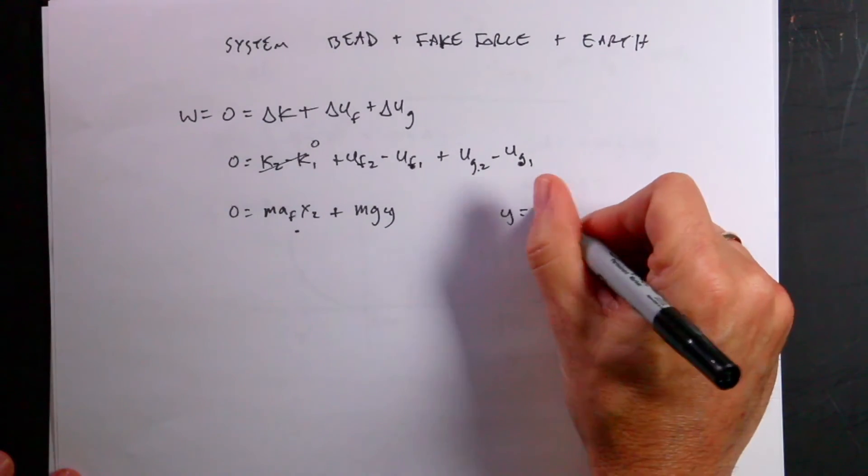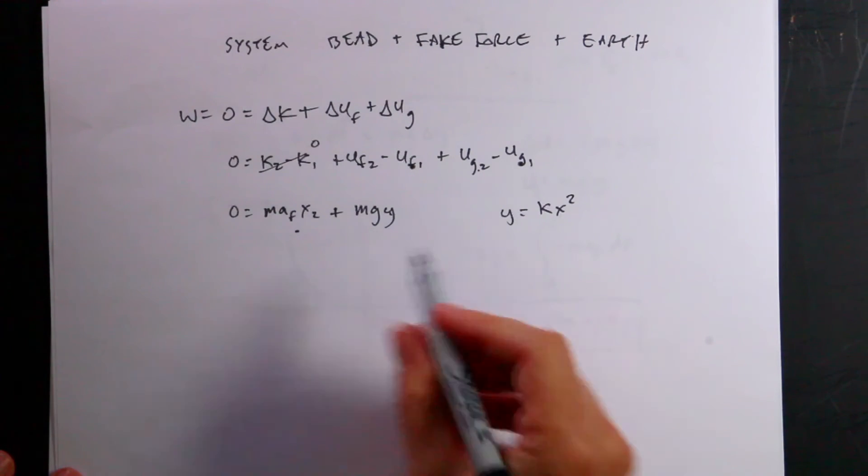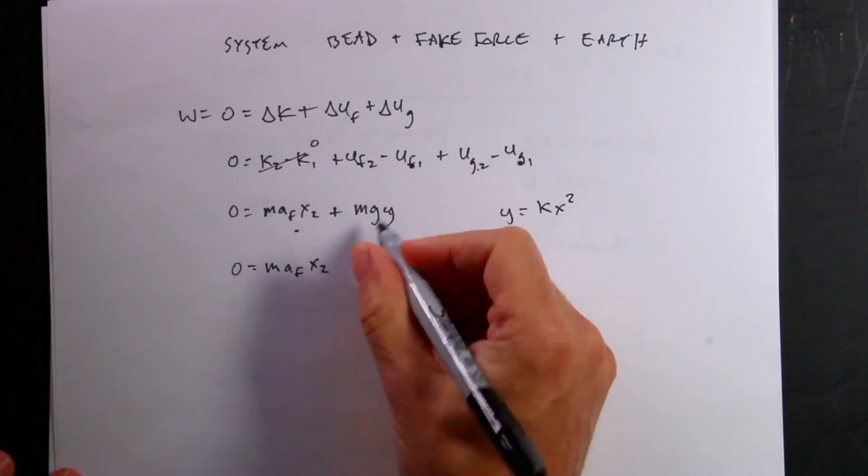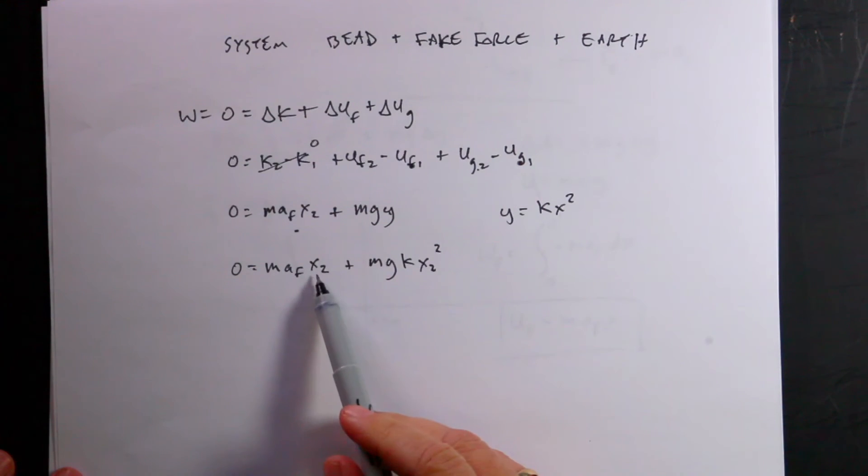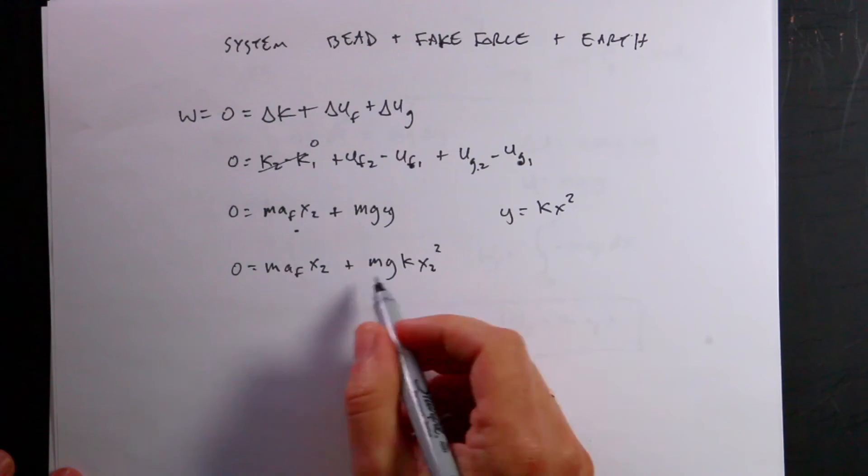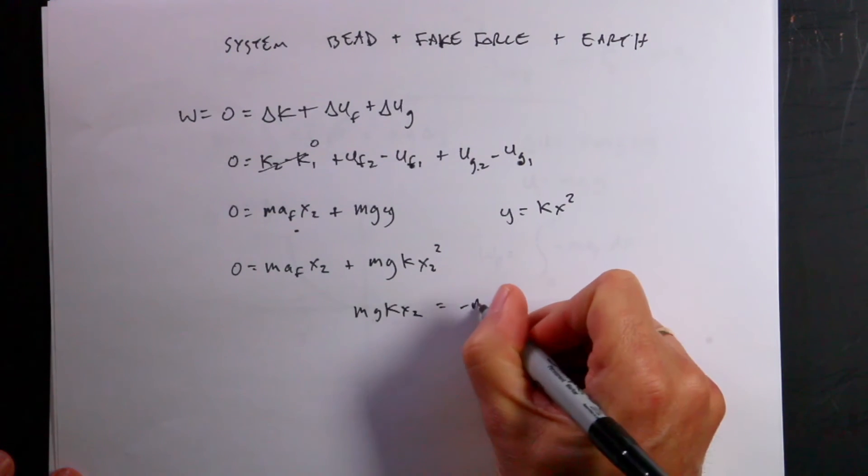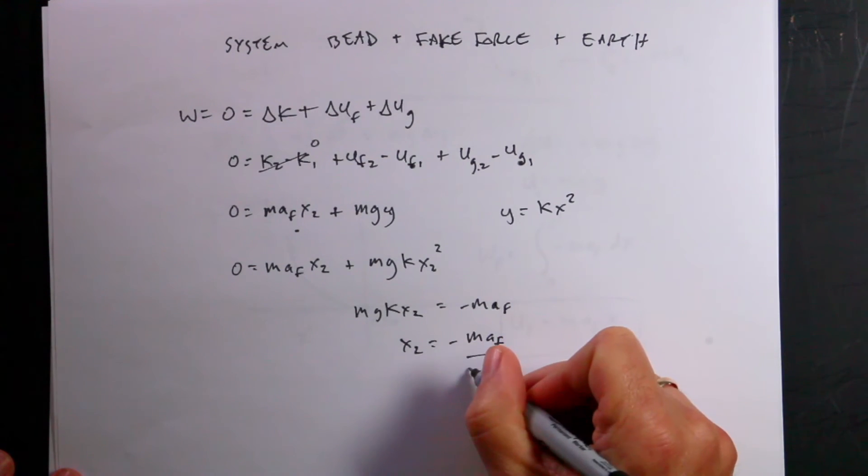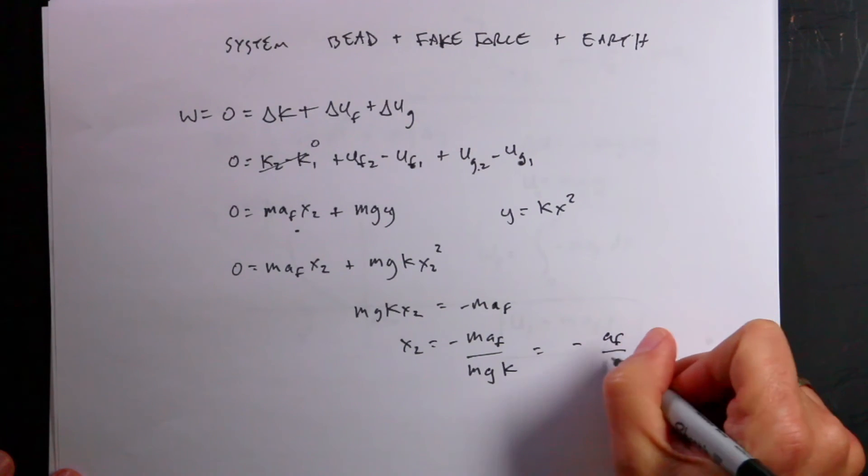Now I want to find out the value of x2. Well, I actually know y equals kx squared, right. That's the relationship between x and y because it has to stay on the path. So I can put that in there. And I get zero equals mafx2 plus mgkx2 squared. And I want to solve for the value of x2. So I'm going to just divide both sides by x2. And I get mgkx2 equals negative maf, x2 equals negative maf over mgk. And the mass is canceled. So I get negative af over gk.